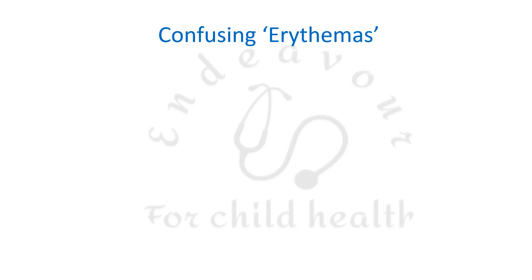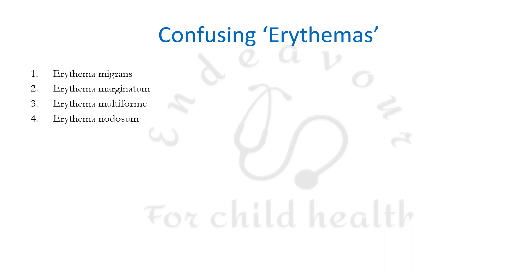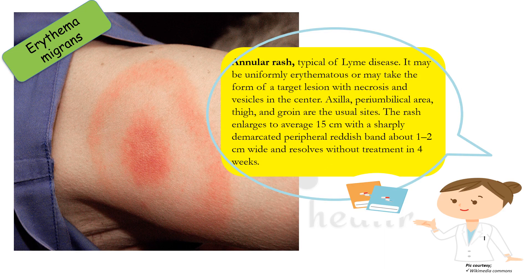There are 4 kinds of rash named with the term erythema, which can be confusing: erythema migrans, erythema marginatum, erythema multiforme, and erythema nodosum. Erythema migrans is an annular rash typically seen in Lyme's disease caused by Borrelia. It may be uniformly erythematous or take the form of a target lesion with necrosis and vesicles in the center. The axilla, periumbilical area, thigh, and groin are usual sites. The rash enlarges to an average of around 15 cm with a sharply demarcated peripheral reddish band about 1–2 cm wide and resolves without treatment in 4 weeks.